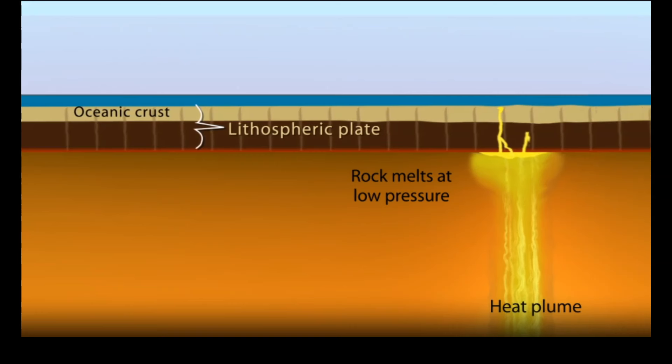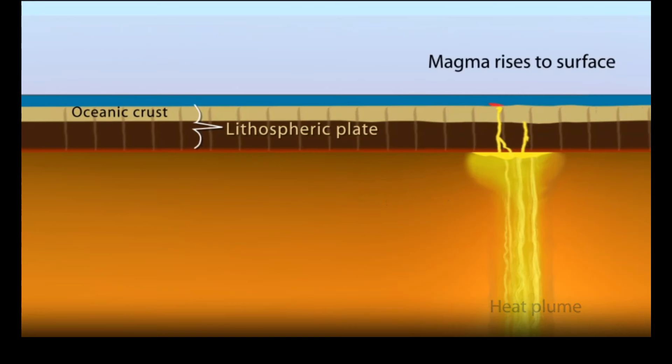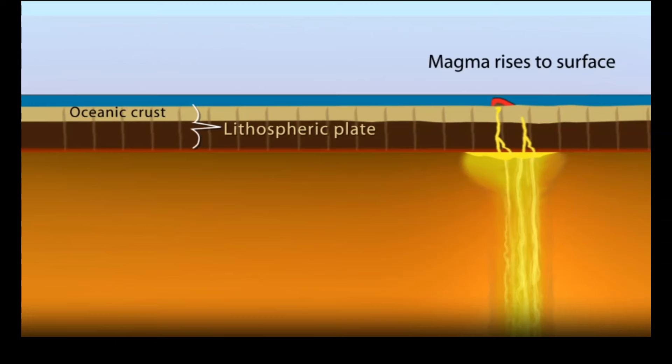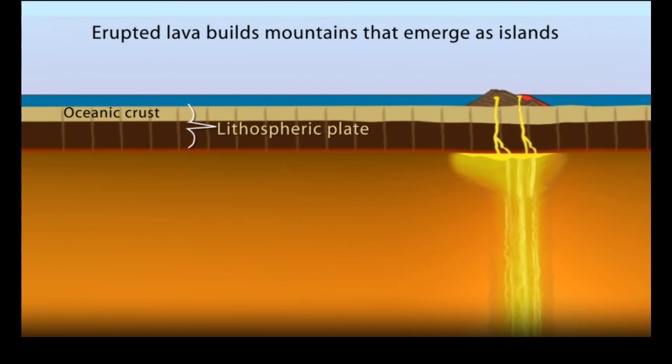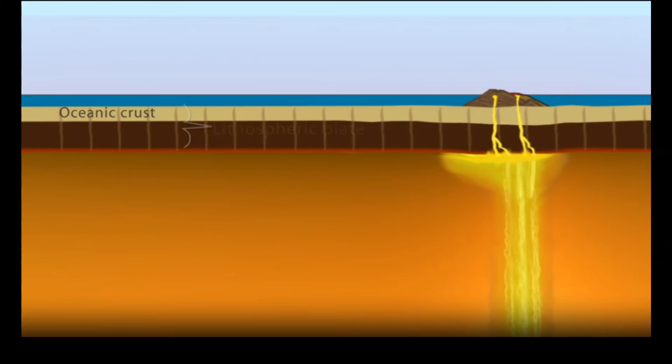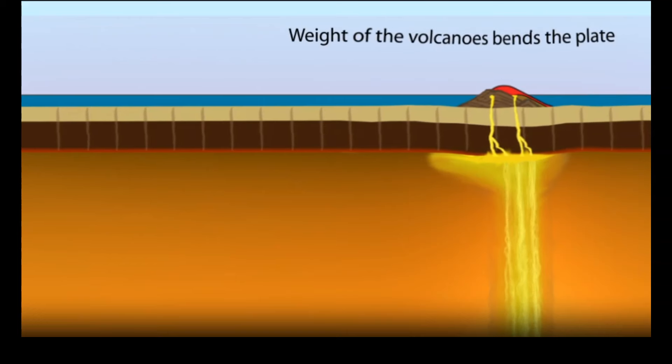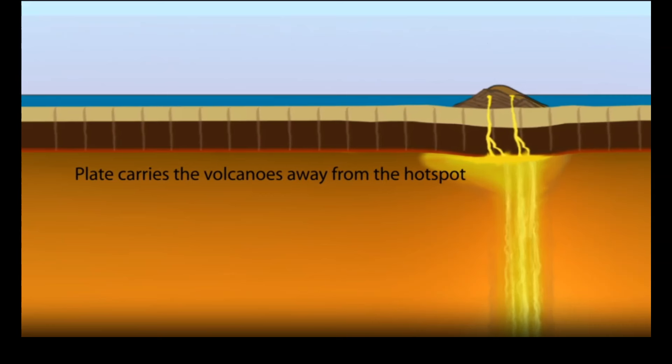So the plate is going to be moving from right to left from our point of view. As it moves, you have melting of rock at weak points and channels through the rock, where that rock gets liquefied. Liquefied rock underneath the surface is called magma. Once it comes above the surface, we call that lava. And so over hundreds of thousands of years, you can form a volcano using this process.